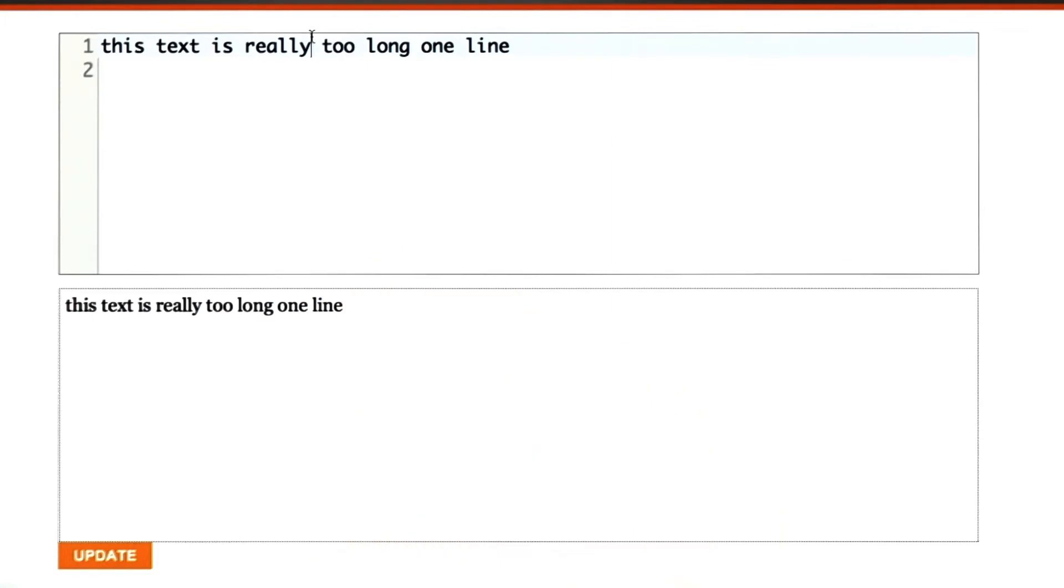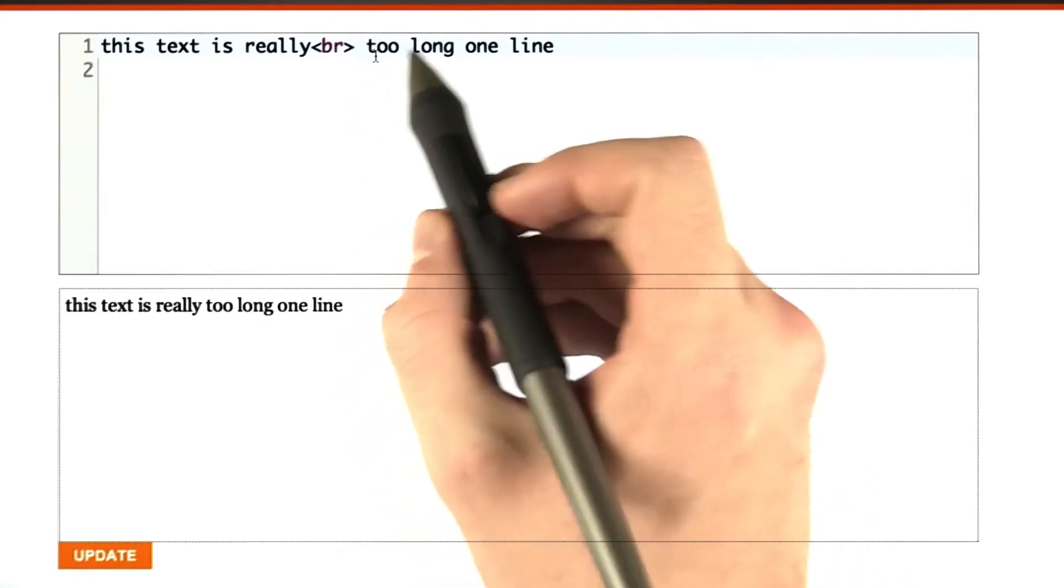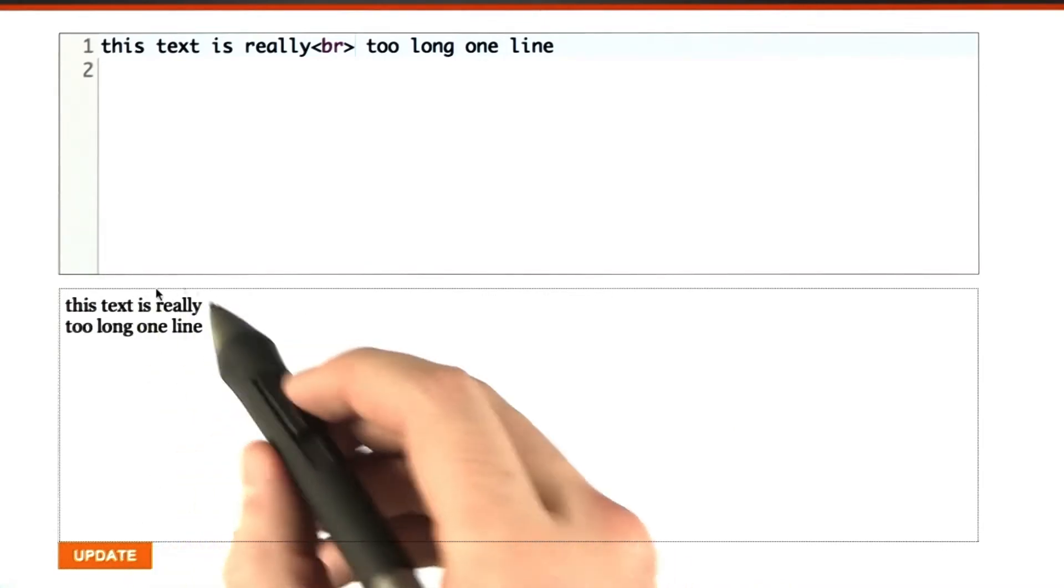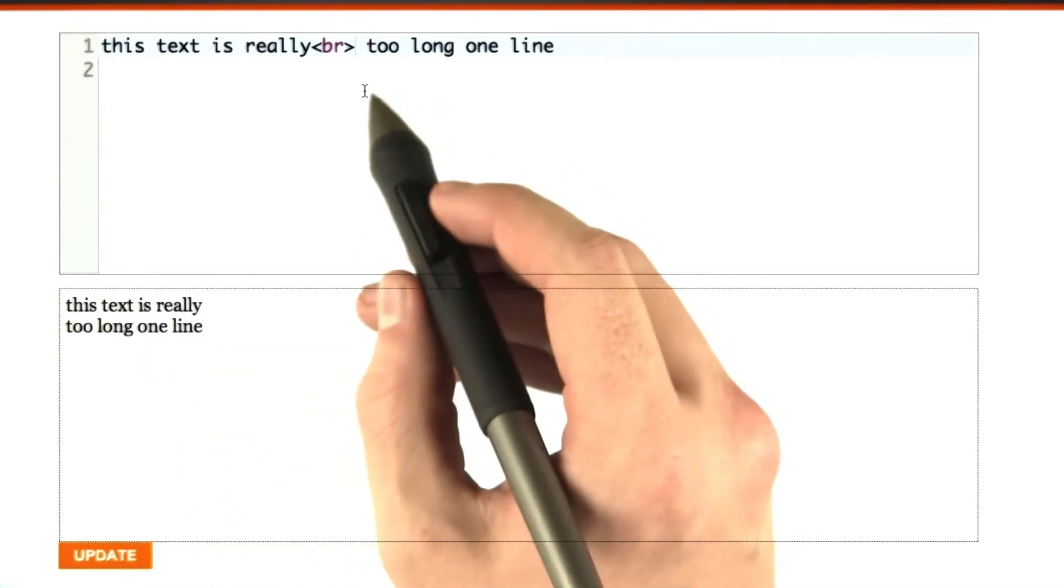If we can put a br tag in the middle of this, we don't actually have to have the line breaks in our HTML. When I click update, we get our line break no matter how the HTML is formatted.